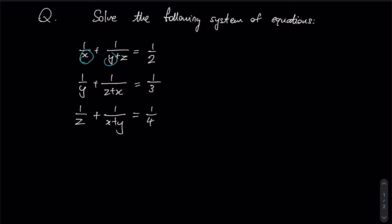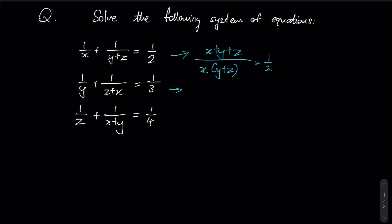They are just shuffling the constants x, y, and z around in their positions. So if we were to cross-multiply these two denominators across, this would actually give us a common numerator of x plus y plus z over x times (y plus z), and this will give us one half.